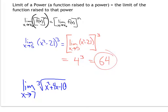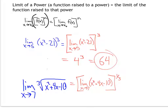We can even do this with radicals. A cube root function is continuous for all values of x. Representing a cube root as the one-third power, we take the limit as x approaches 7 of (x² + 4x − 10) to the one-third power. Plugging in 7: 49 + 28 − 10 = 67, so we have 67 to the one-third power, which is the cube root of 67.